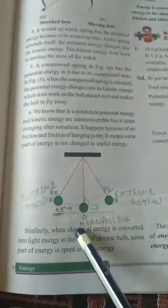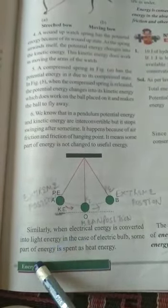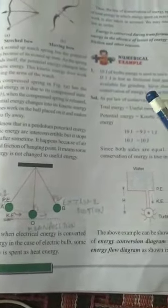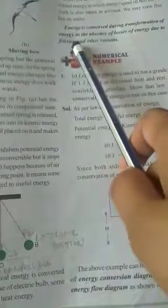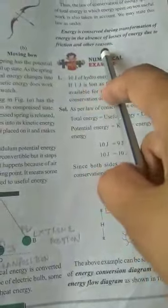Similarly, when electrical energy is converted into light energy, some part of energy is spent as heat energy. So, law of conservation of energy states that energy is conserved during the transformation of energy in the absence of losses of energy due to friction and other reasons.